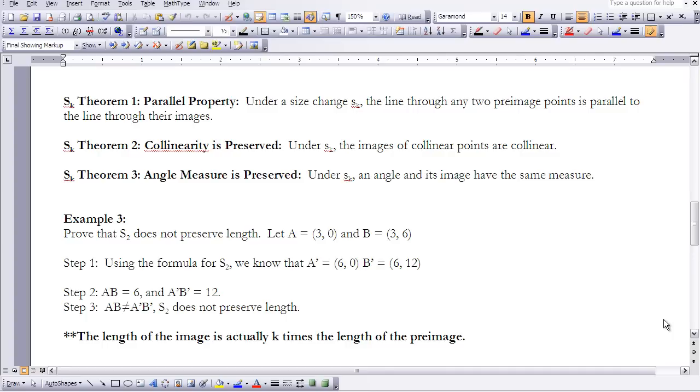So the third example that I want to do is I want to look at the length of your segments. So I want you to prove that a size change of 2 does not preserve length. So I want you to look at A be 3, 0, and B be 3, 6. So using the formula for a size change of 2, we know that A prime would be 6, since 3 times 2 is 6, and 0 times 2 is 0. And 3 times 2 is 6 here, and 6 times 2 is 12. So if I want to go here, if I'm going to make a segment from A to B, that distance is going to be at 0, and I'm going to 6, so that distance is going to be 6. And here I'm going to go from 0 to 12. So that distance A prime to B prime is 12. So AB is not equal to A prime, B prime. It's actually 2 times, so size change of 2 does not preserve length. The length of an image is actually k times the length of the preimage. So that's a very important piece.